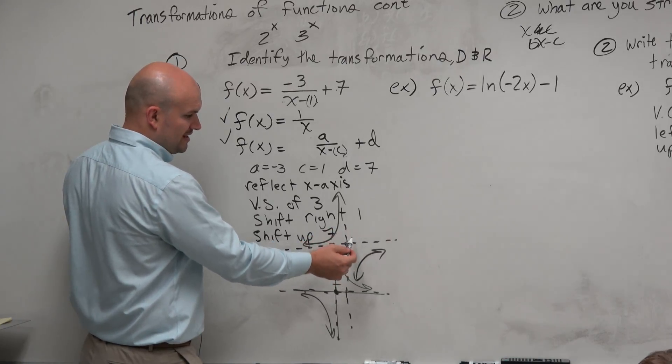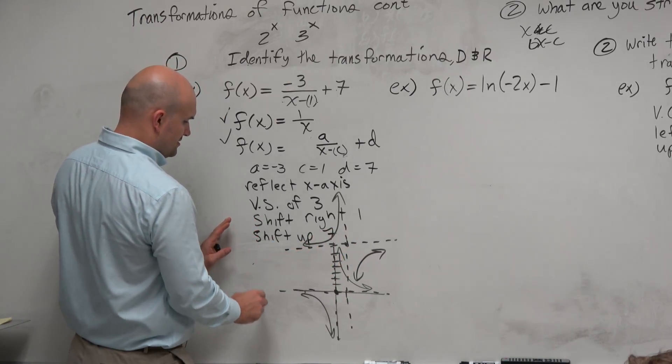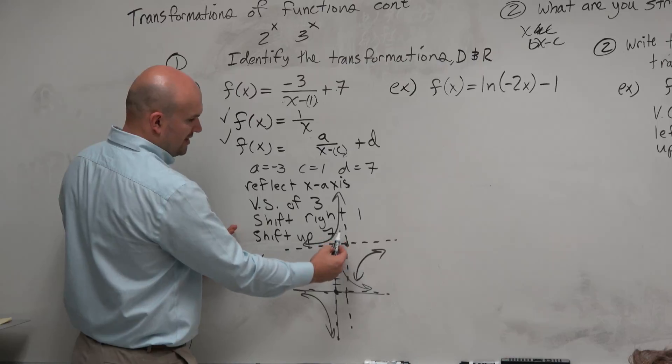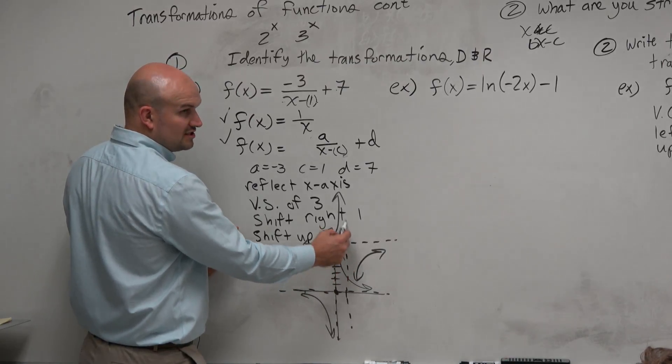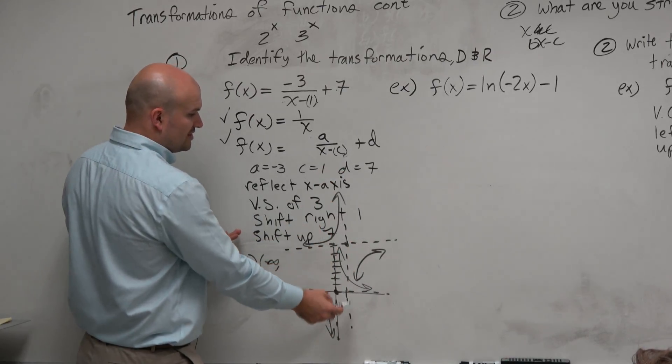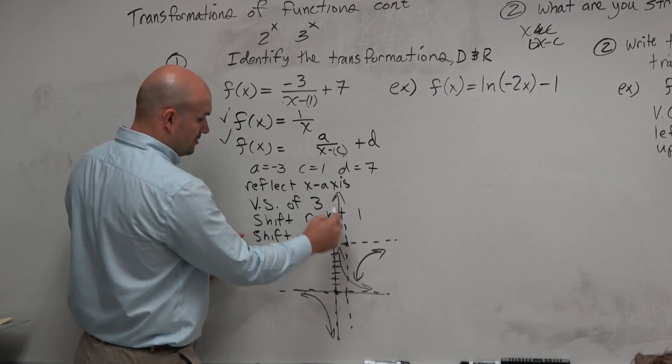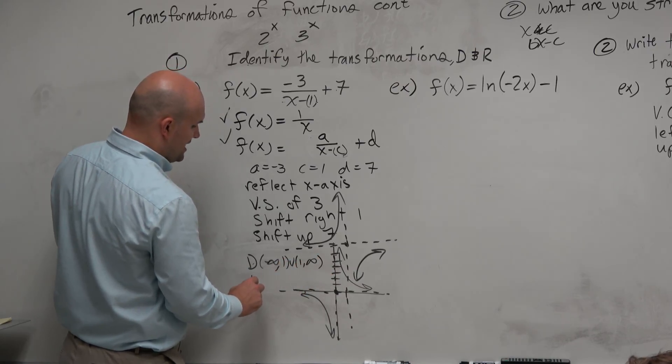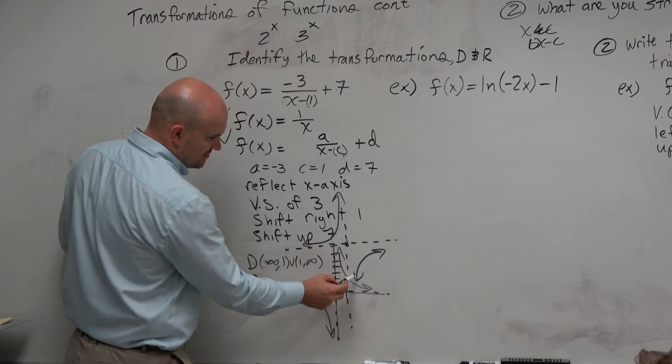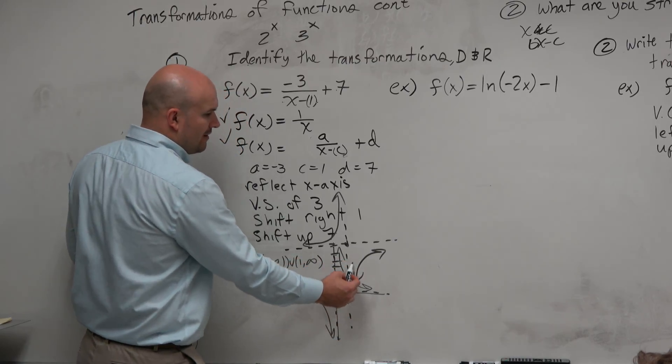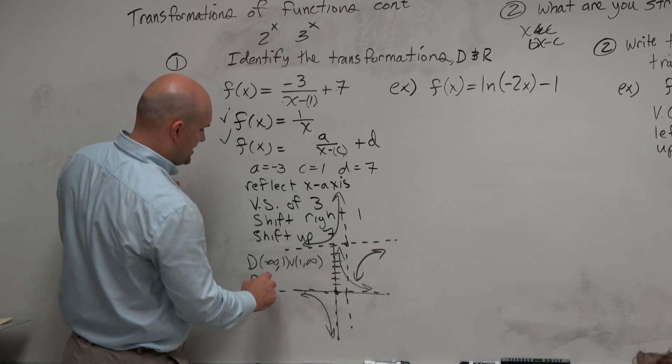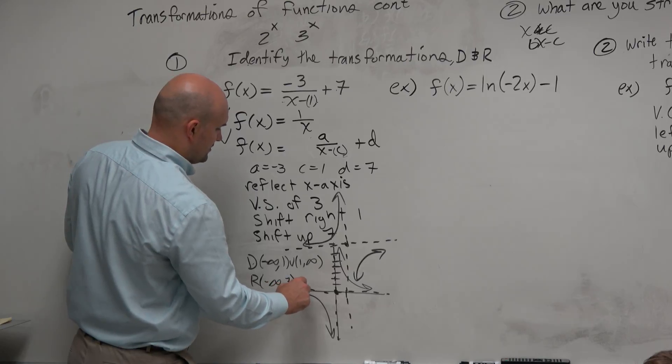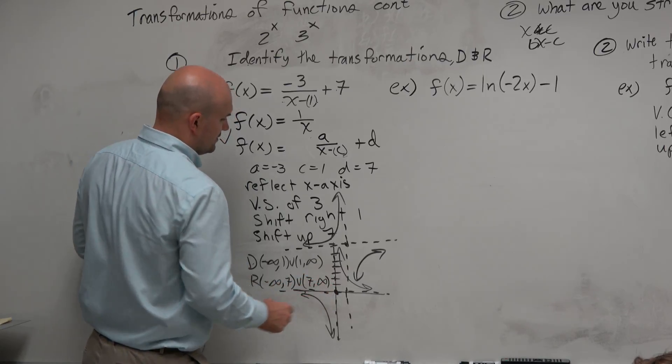And so now let's identify the domain and range. So we see the domain here is going from negative infinity all the way to, well, how far does it go until it's undefined? Where's the new vertical asymptote? That would be 1. So it goes all the way to 1, and then from 1 to infinity. Whereas the range goes all the way down to negative infinity, and then how high does it go up until it's approaching asymptote? 7. So the range is from negative infinity to 7, union 7 to infinity.